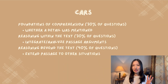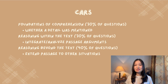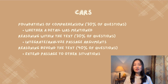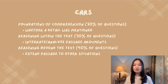The CARS section is made of three types of questions. There is Foundations of Comprehension, which is 30%, essentially asking you if a detail was mentioned in the text. There are also Reasoning Within the Text questions, which ask you to analyze sections and arguments and consider the author's perspective and intentions. Finally, there are Reasoning Beyond the Text questions, which make up 40% and ask you to extrapolate the passage's ideas to new contexts — for example, picking an analogy that best fits the meaning of the passage.